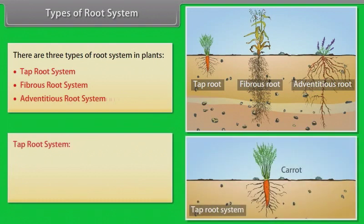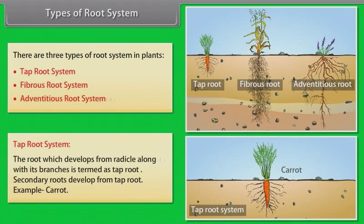Tap root system: the root which develops from the radicle along with its branches is termed as tap root. Secondary roots develop from the tap root. Example: carrot.